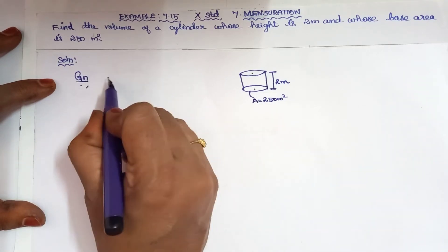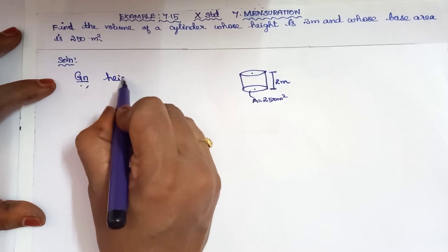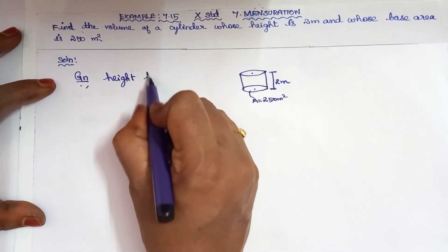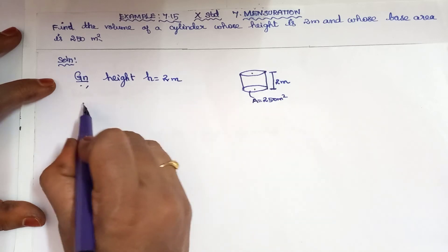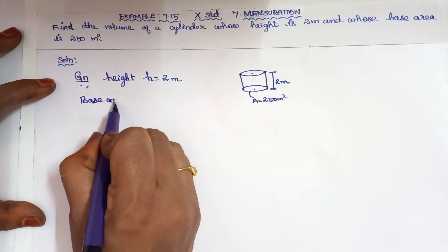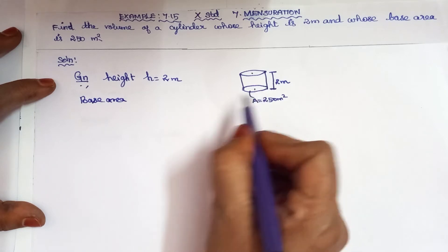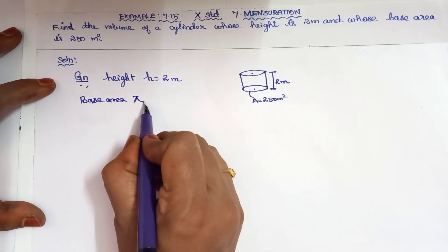Given: height h equals 2 meters, and base area, which is circular in shape, equals 250 meters square.